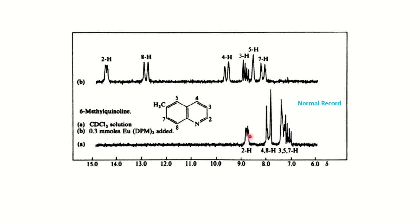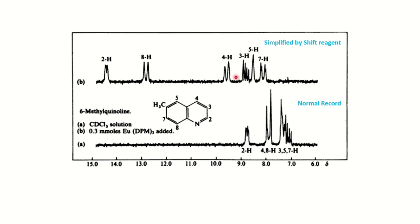With the help of Eu(DPM)₃, which forms a complex with the organic molecule through the nitrogen lone pair, and through dipolar interaction, the peaks are now spread out over a wide range. You can now find each peak clearly in the spectrum. It is now a simplified first order spectrum — an AX spectrum. We have converted the second order AB spectrum to a first order AX spectrum.